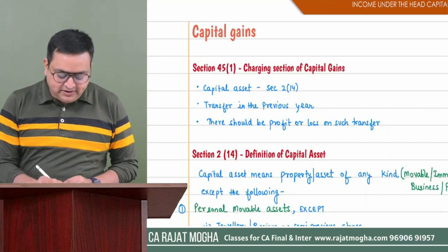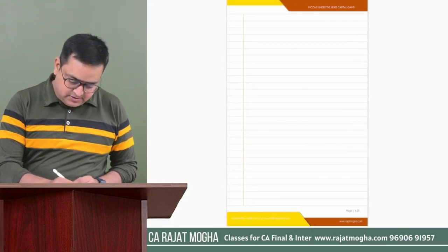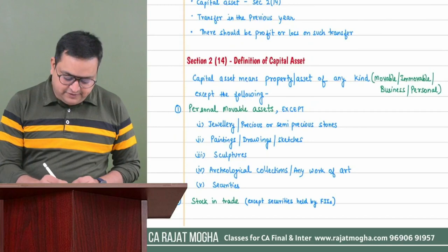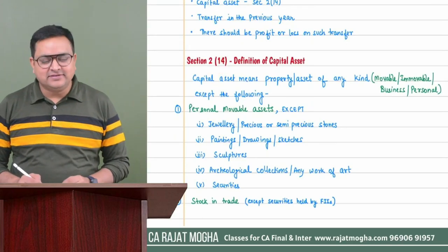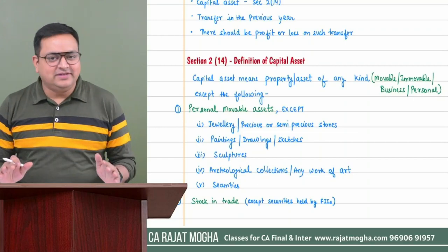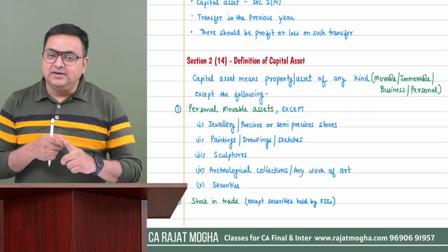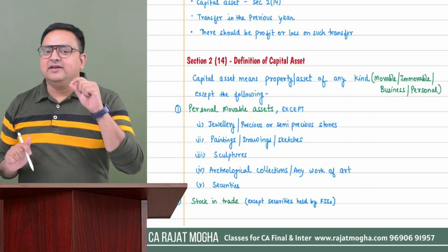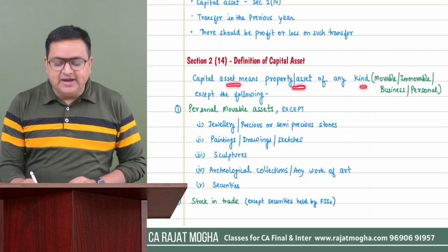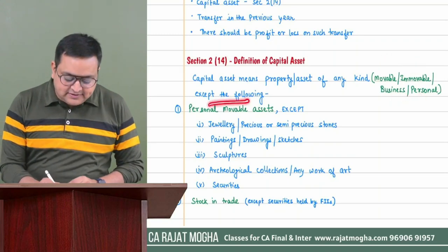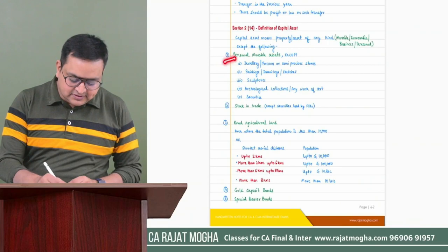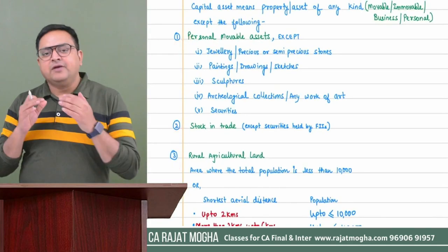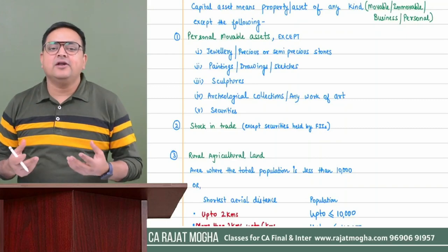The question is: what is a capital asset? It is defined in section 2(14). It says all assets generally are capital assets — whether they are personal or business assets, movable or immovable. Capital asset means property or assets of any kind, except certain listed exceptions. Assets mentioned in those exceptions will not be considered as capital assets, so capital gain will not arise if those assets are transferred.